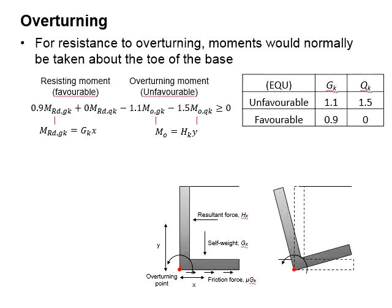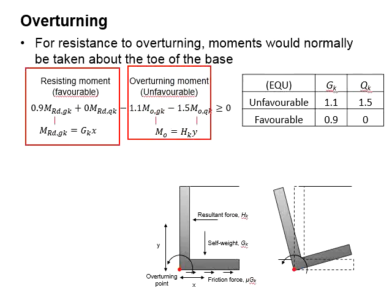To check for the overturning resistance, the resisting moment, which is favorable, needs to be greater than the overturning moment, which is unfavorable.